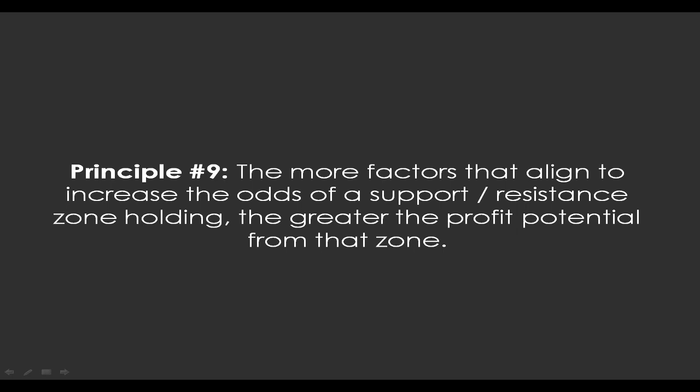For instance, if all the principles are met — it's a larger time frame support and resistance zone, there's confluence with other zones, a quite important move had previously launched from that zone, and the larger time frame biases are aligned with the direction of your trade — then that's definitely an automatic fade zone. You just want to have your order there, and that's probably going to be a pretty good profit potential zone.